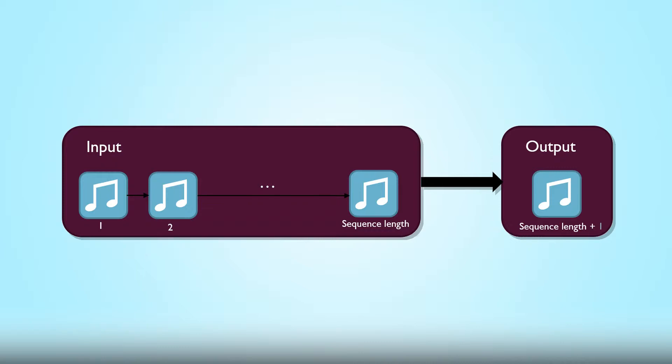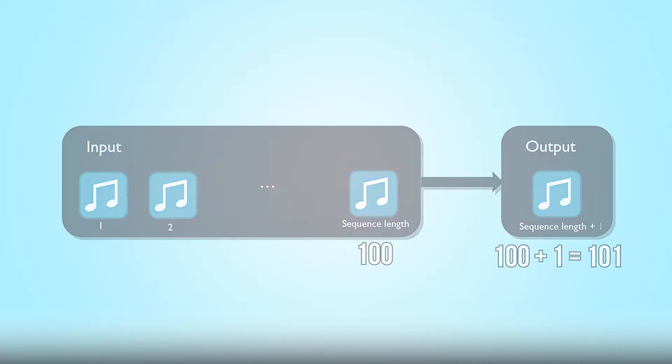So for example, if our sequence length is 100, then the 100 notes would be the input, and the 101st note would be the output. Training was completed successfully in about 30 hours on a cloud machine with GPU compute. We can take a listen at the result.